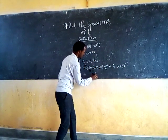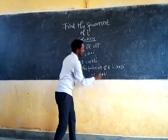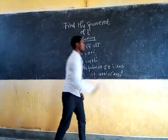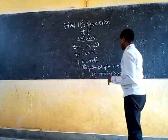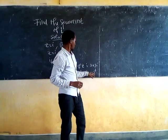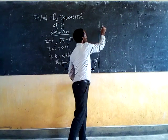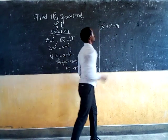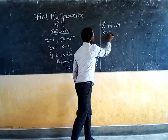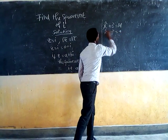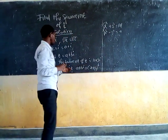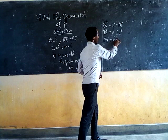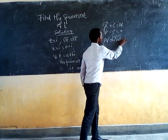It means that a plus bi equals (x plus yi) squared. To find x and y, we use the equations: x squared plus y squared equals the modulus of z, and x squared minus y squared equals a. The modulus of z equals the square root of 0 squared plus 1 squared, which equals 1.